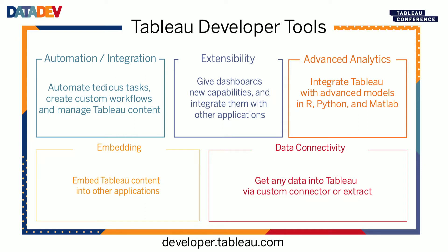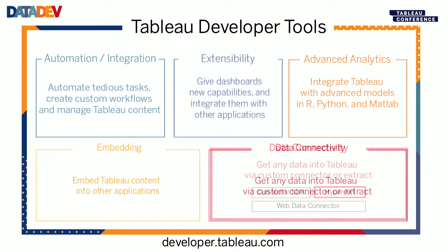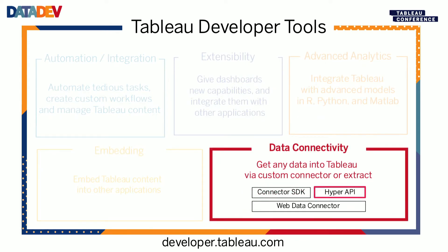We have three APIs that make up the data connectivity API: the Web Data Connector, the Connector SDK, and the Hyper API. That begs the question — if you fire up Desktop and have access to 75-plus or 80 supported connectors, why would you ever need an API to get data into Tableau? It's really for everything else — unstructured data, data coming from a web service, XML or JSON in the cloud, a spreadsheet or a data lake. It's really for everything else.